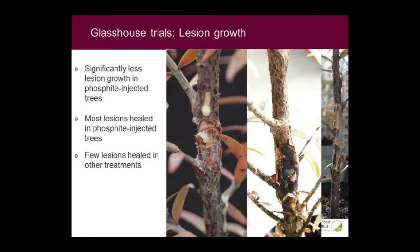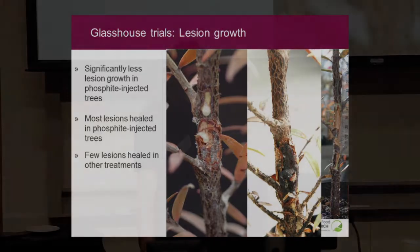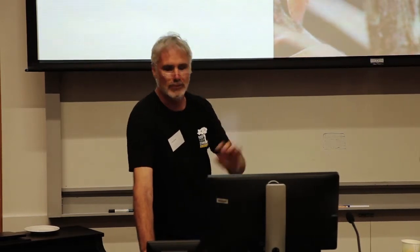The lesion growth was a lot greater in the trees that had been left untreated. Where the trees were treated — particularly where they had been injected with the phosphite — the lesion spread was generally quite small, and in most cases healed around the margin and started cracking. Two years later, those same trees had formed a callus over the wound that had healed, had melanised and gone black on the outside, and was very healthy underneath.